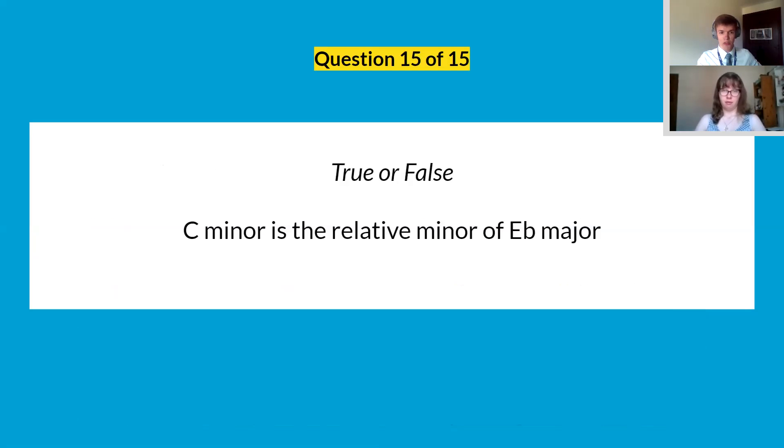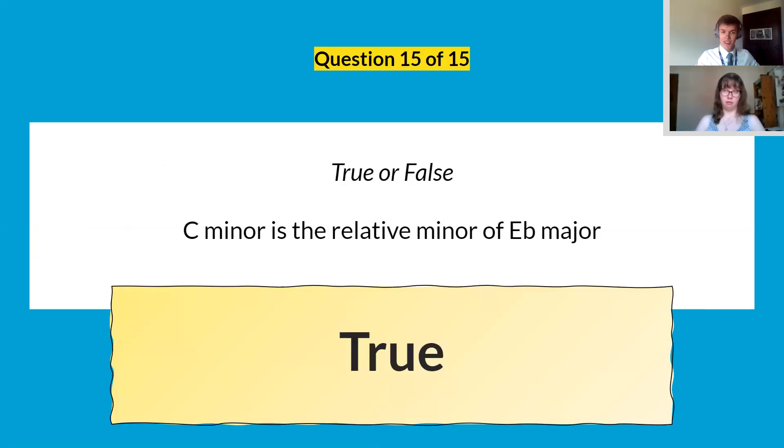And then the last question, true or false, C minor is the relative minor of E flat major. This one is true. It is the relative minor of E flat major and they both have three flats in their key signatures.